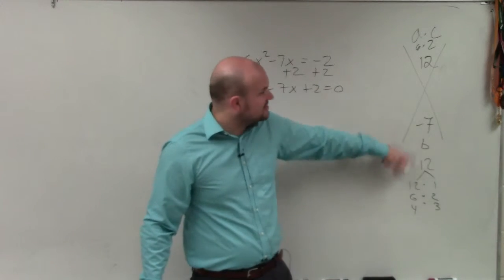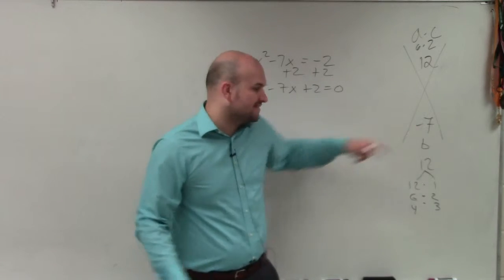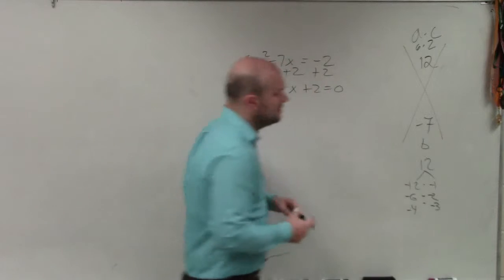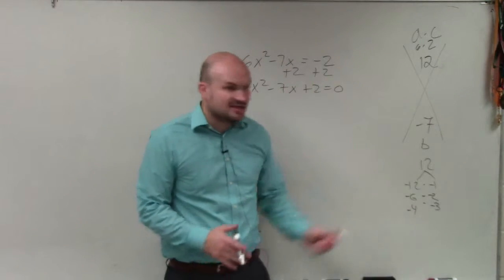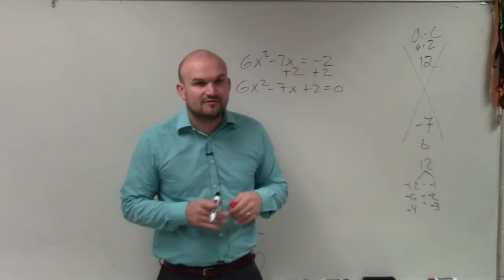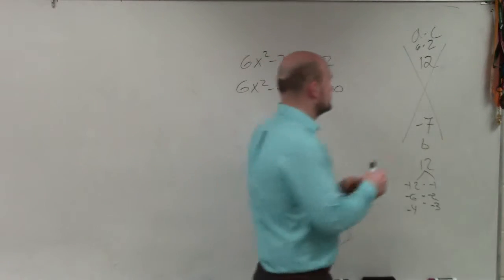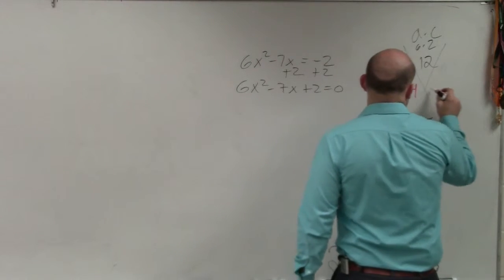Now we notice, though, that these factors, they have to multiply to give us 12, but they have to add to give us negative 7. So therefore, these all have to be negative. Now what is the only pair of factors that add to give us a negative 7? Negative 4 and negative 3.